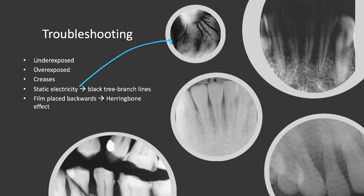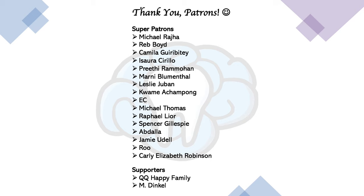Creases or folds when the image was developed or scanned can create a dark, radiolucent sharp line going through the image. Static electricity causes black tree-branch lines to form wherever it was generated. Finally, specific to film: the herringbone effect is a tire-track appearance caused when the lead foil attenuation pattern from the back of the film is projected onto the emulsion layer because the film packet was placed backwards.